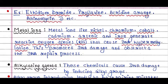Metal ions like nickel, chromium, cobalt, cadmium, arsenic, and iron generate reactive oxygen species (ROS) that cause DNA hypermethylation. DNA hypermethylation is a biological process by which numerous methyl groups are added to the DNA molecule, promoting DNA damage and obstructing the DNA repair process.